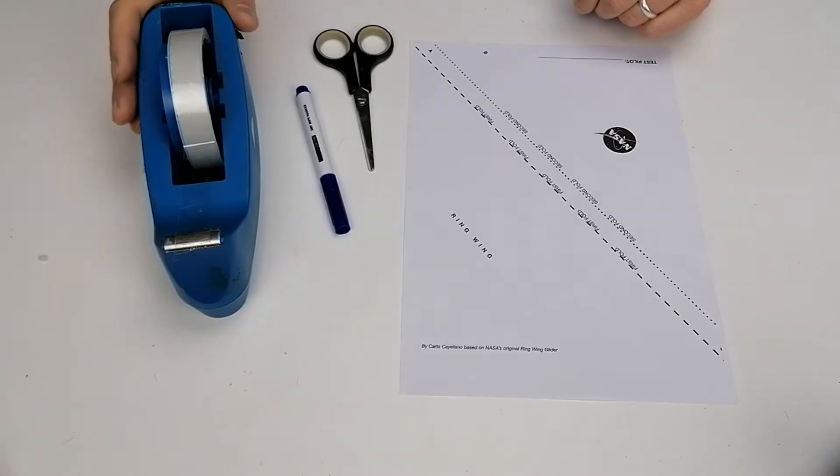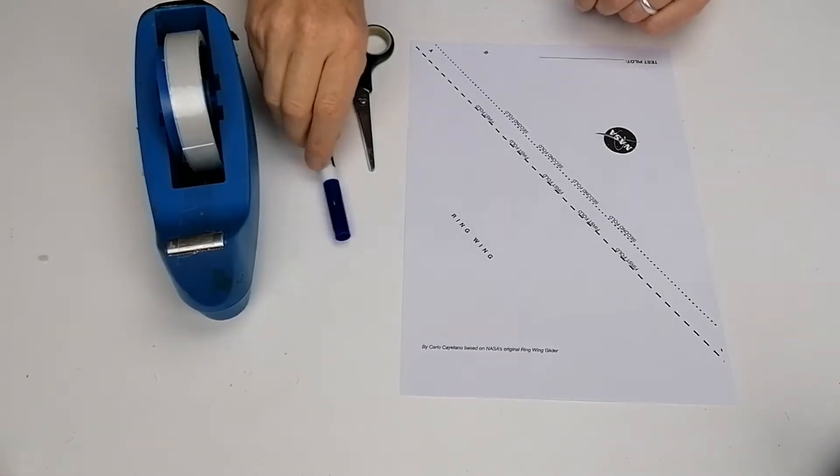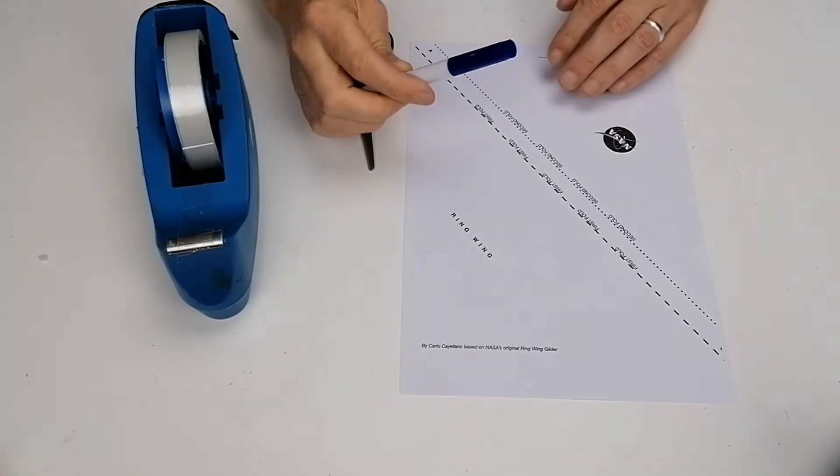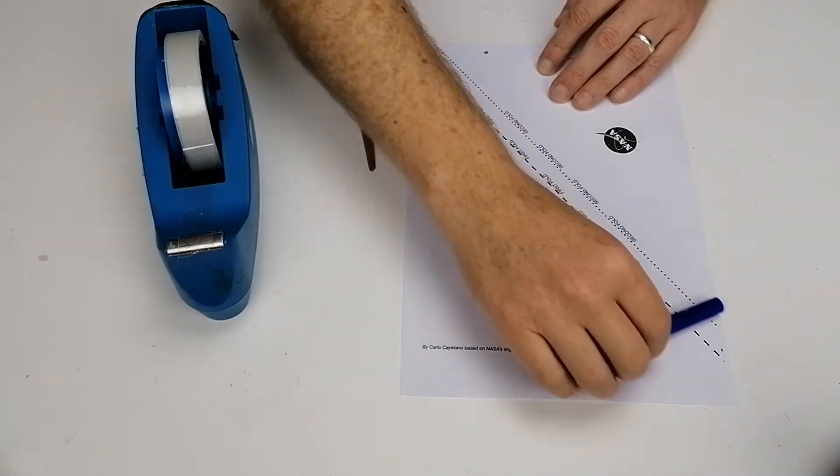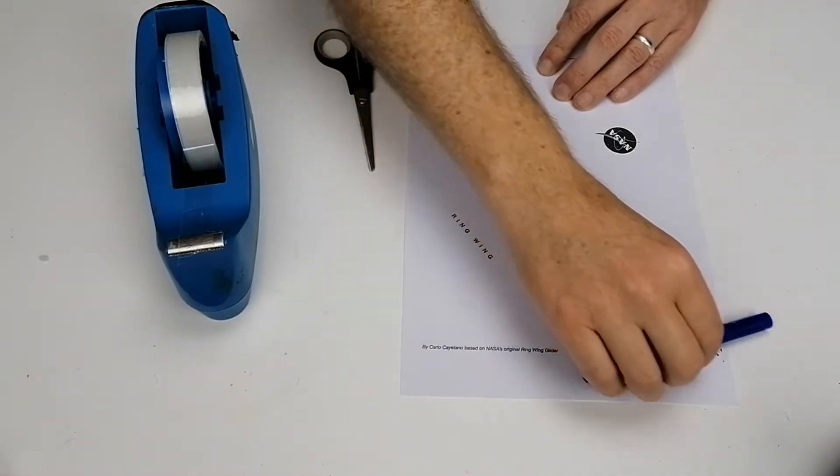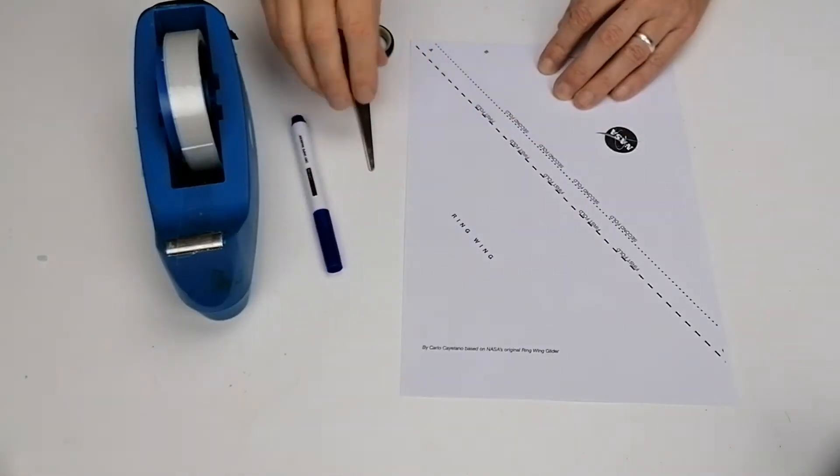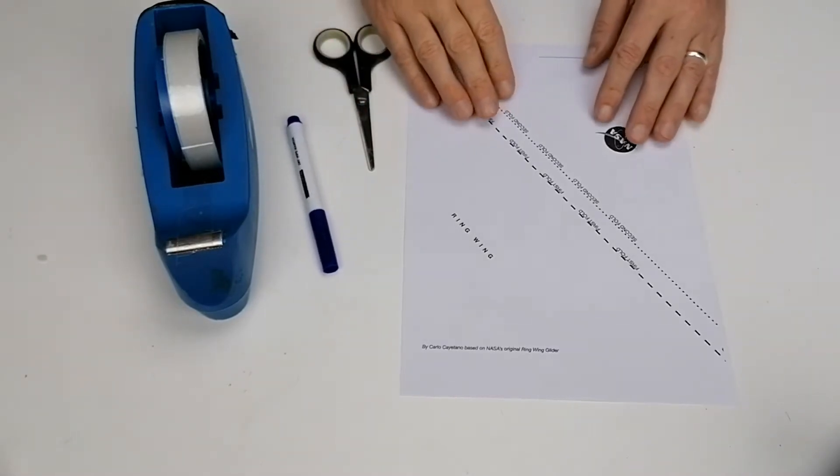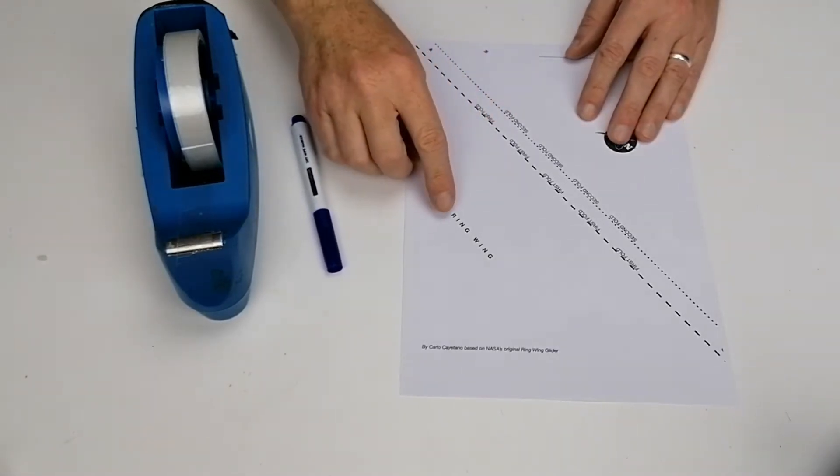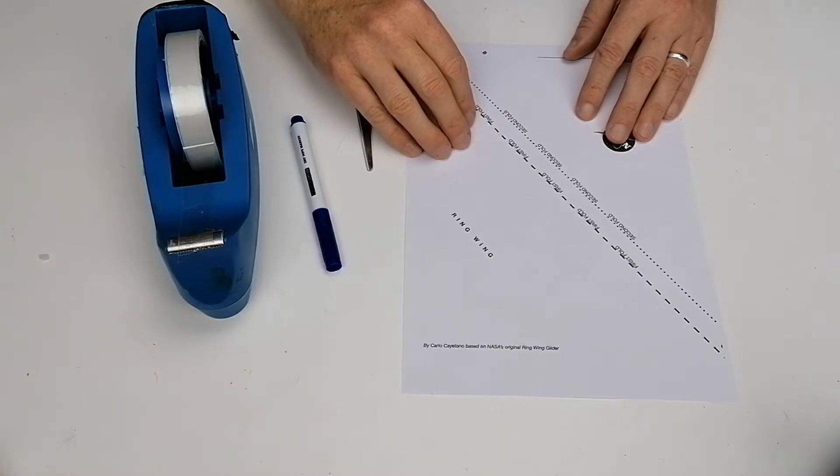For this activity, you're going to need some sellotape, a marker just to push down on the paper to make the folds nice and crisp, scissors, and then you're going to need what's called the ring wing design template.